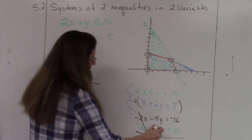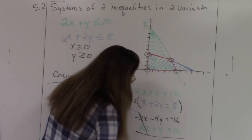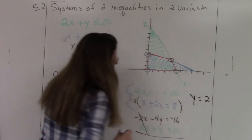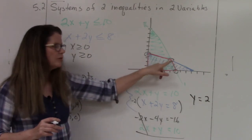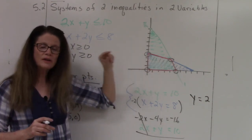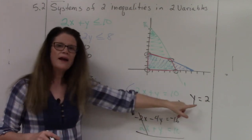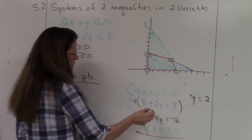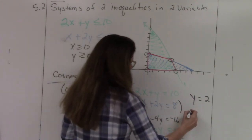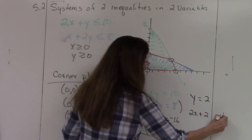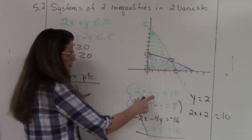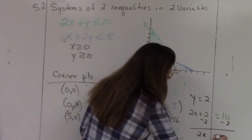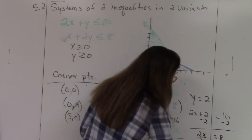Adding the two equations: −3y = −6, so y = 2. To find x, I substitute y = 2 back into the first equation: 2x + 2 = 10, giving x = 4.